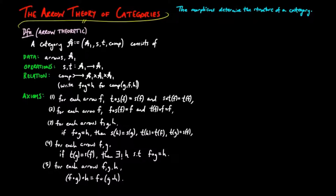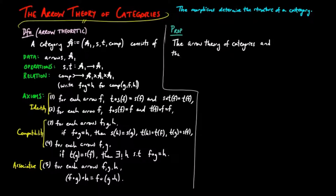The axioms here correspond to the identity, compatibility, and associative axioms in the object morphism theory of categories. And this is used to prove that the arrow theory of categories and the object morphism theory of categories are in fact equivalent.